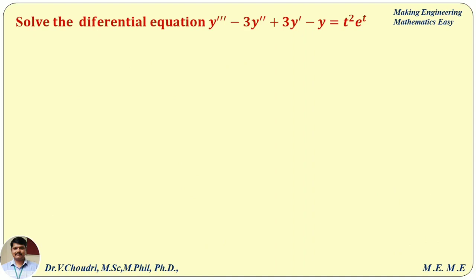Now let us discuss the problem. Solve the differential equation y''' − 3y'' + 3y' − y = t²·e^t, with initial conditions y(0) = 1, y'(0) = 0, and y''(0) = −2.